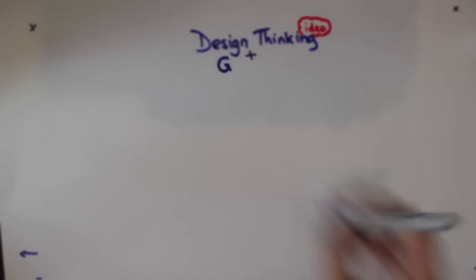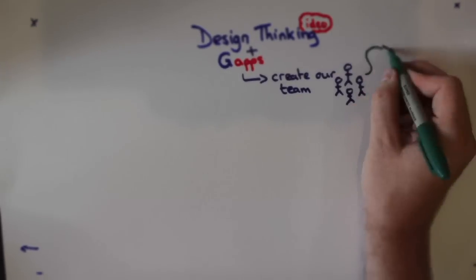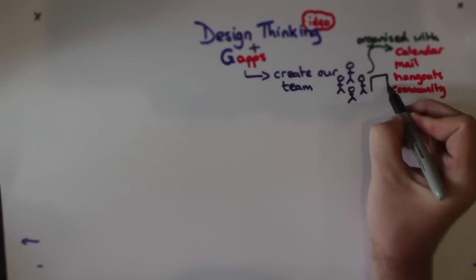So, one of these tools that we use is Design Thinking in Google Apps. Creating our team, which we organise with Calendar, Mail, Hangouts, Community.